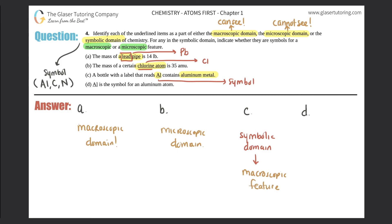Last but not least, Al is the symbol for an aluminum atom. There's that symbol again, so right off the bat it is a symbolic domain. Now we just got to figure out what it's talking about and can we see it or can we not.